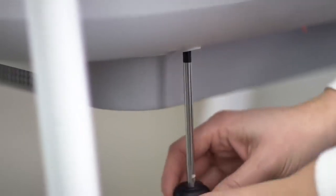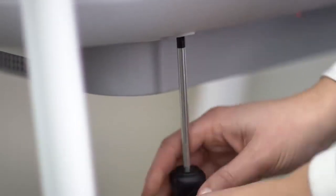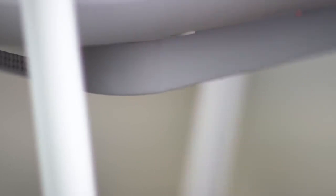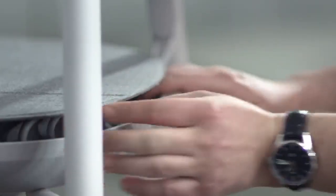Secure the tray in place from underneath using the remaining ten screws in the clear bag. You can wrap any excess cable around the inner ring of the tray.